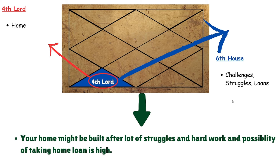The fourth lord shows your home and the sixth house shows challenges, struggle, and loans. There is a possibility that your home will be built after a lot of struggles and self-effort. This placement almost certainly indicates a need for a home loan when purchasing a property. However, you will eventually make it happen and have your own home, because the sixth house is also an upachaya house — things will definitely improve with time.